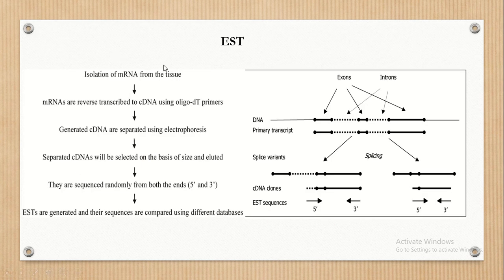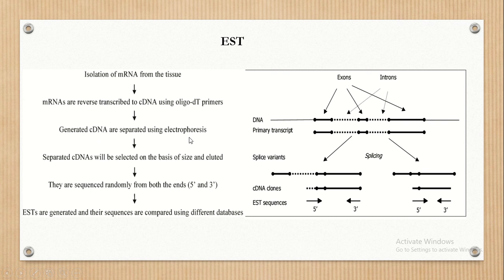The steps involved in EST are: first, isolate the mRNA from the tissue used for research. Then add primers — oligonucleotides are short stretches of DNA sequences. Next, generate the complementary DNA, then separate it with the help of electrophoresis. Finally, analyze the complete structure of the DNA with the help of EST. The EST sequences will be generated, showing the complete structure of the gene and how it undergoes the splicing process.